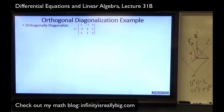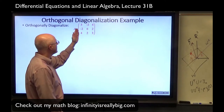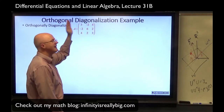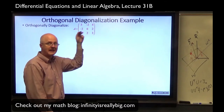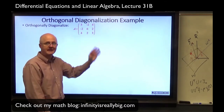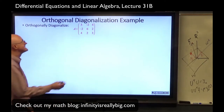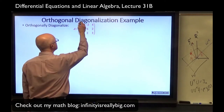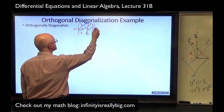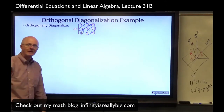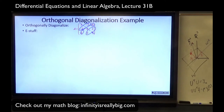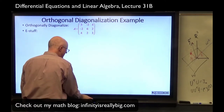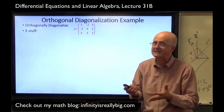Example: orthogonally diagonalize this 3×3 symmetric matrix. Notice it is symmetric — if you swap rows and columns you get the same matrix back. Another way to think about it: there is symmetry across the main diagonal, where off-diagonal entries match their mirror counterparts. We'll compute the eigenvalues and eigenvectors, which turn out fairly simple for this specially chosen example.